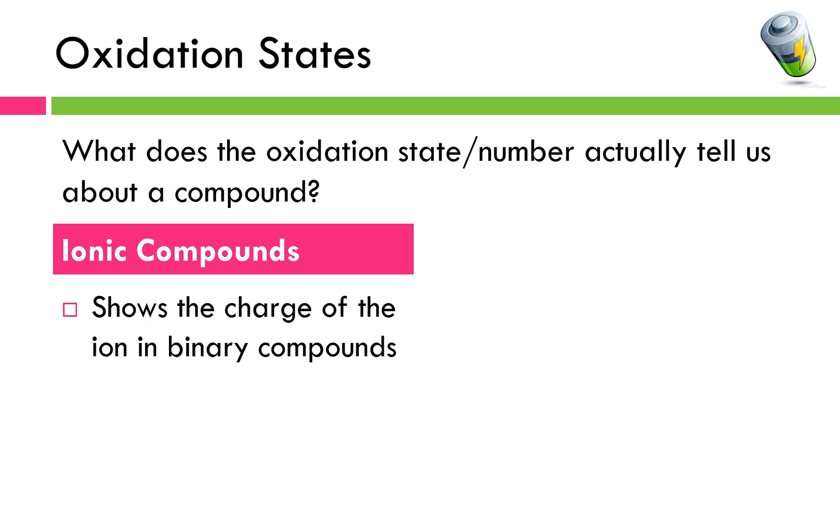For example sodium chloride is binary, that's a sodium ion and a chloride ion. Something like calcium chloride is also considered binary. It's a calcium ion and two chloride ions.